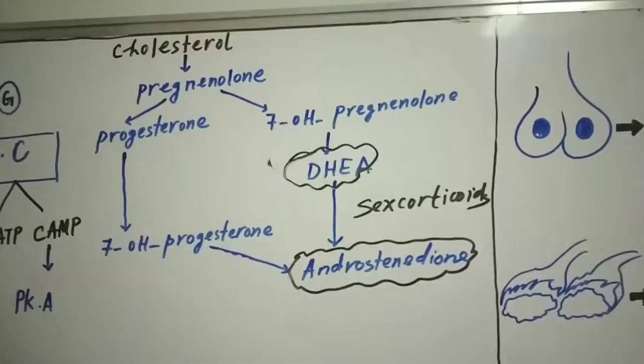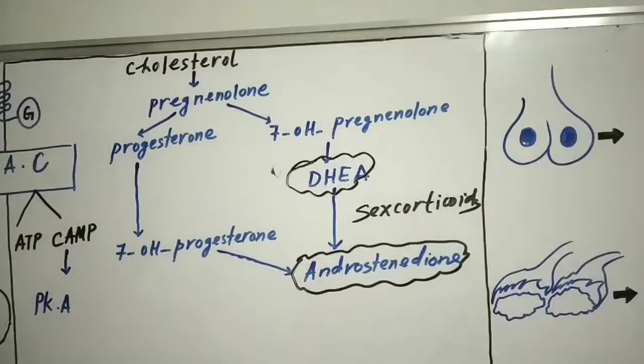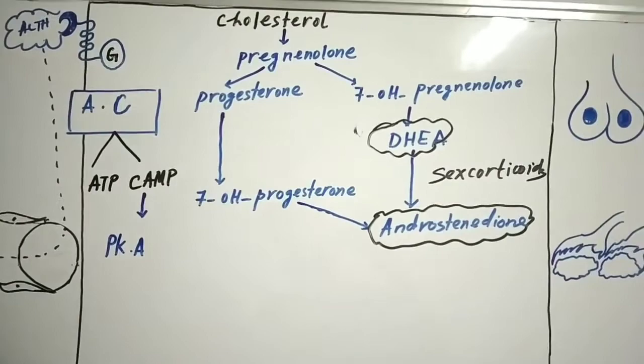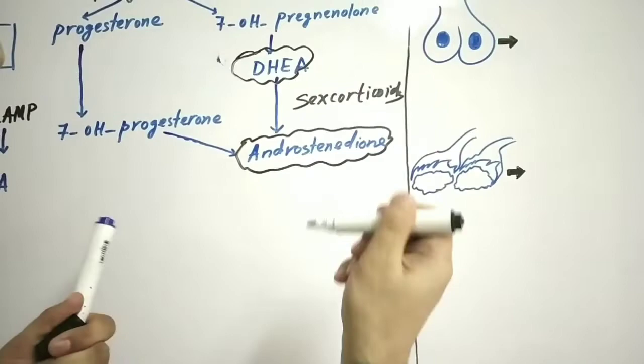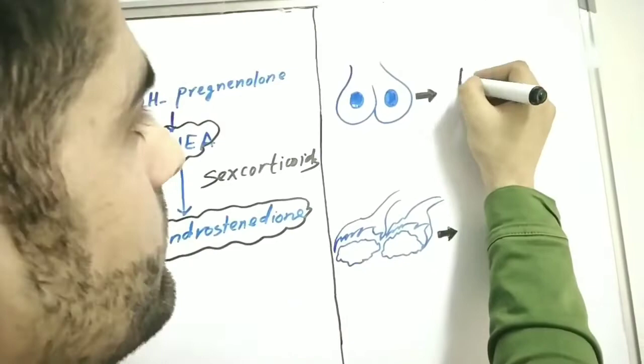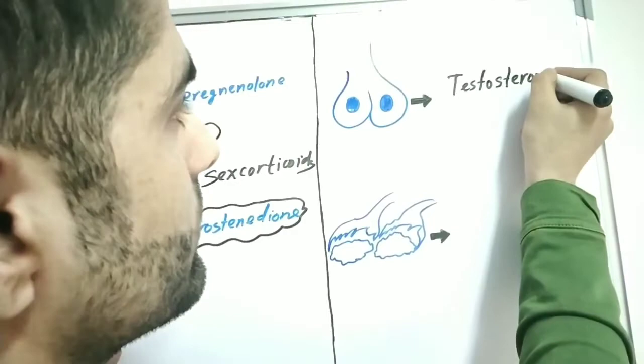These sex corticoids are also known as gonadocorticoids. They are weak sex hormones. They can either go to the testes in males, where they are converted into testosterone, or they can go to the ovaries in females, where they are converted into estrogen.